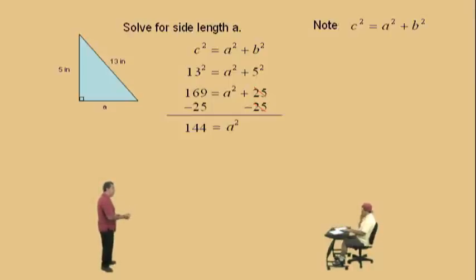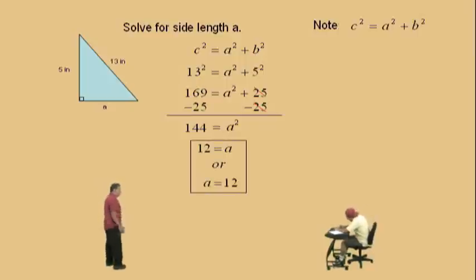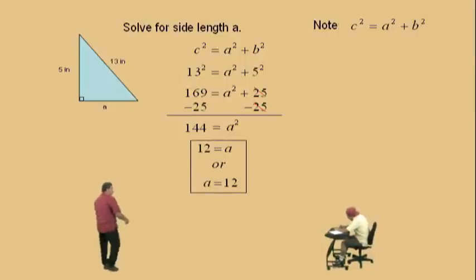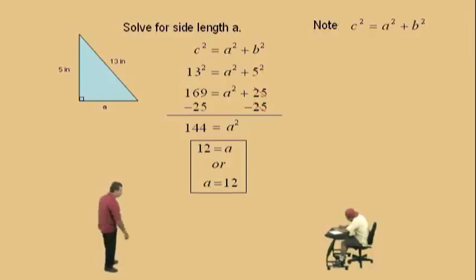So 144 equals A squared, Charlie. What number do you square to get 144? 12. That's right. So 12 should equal A, which means A equals 12. That's our missing side length. You can see if you take 12 squared, which is 144, plus 5 squared, which is 25, you'll get 169, and if you take the square root of 169, you get 13. So the theorem does work. That's a tough problem there. Okay, we're going to do more of those later.